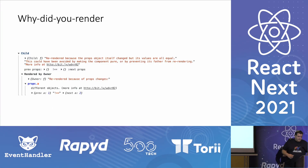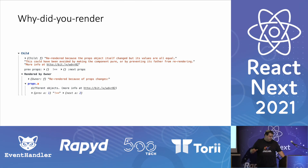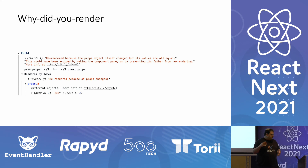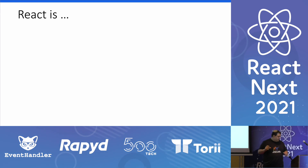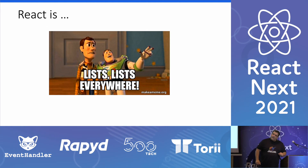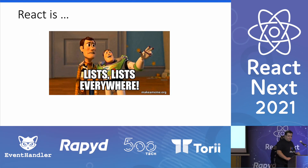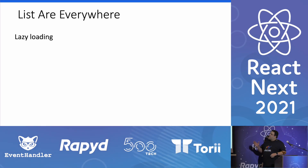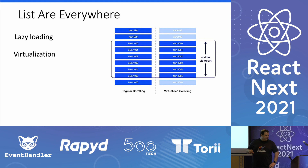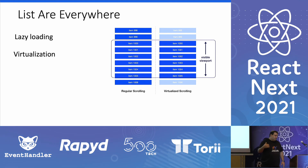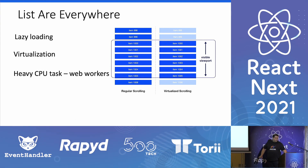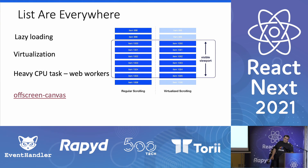We can take another approach with lists. We can lazy-load the list, bringing it piece by piece. We can virtualize the list — showing the user only what they need to see, plus a buffer above and below. We can also offload heavy CPU tasks to web workers, and another very nice approach is offscreen canvas. Here I have two canvases running on the same page: one rendered in the main application thread, and one rendered with a web worker. Watch what happens when I block the thread — the canvas on the worker keeps going, while the canvas on the main thread is blocked.